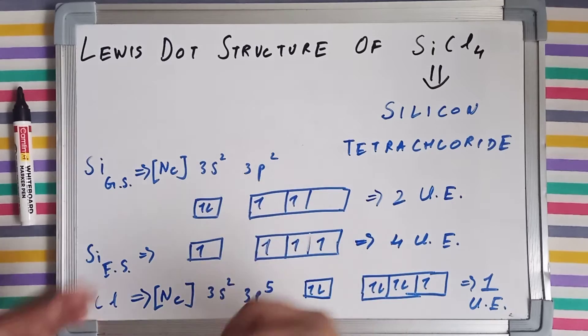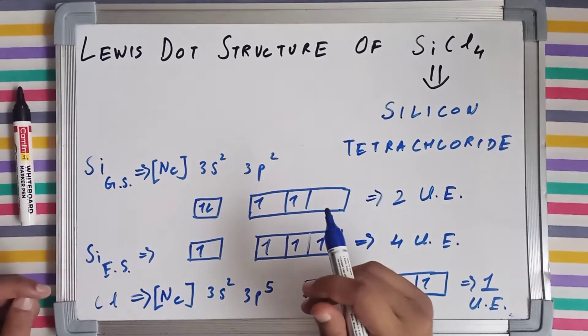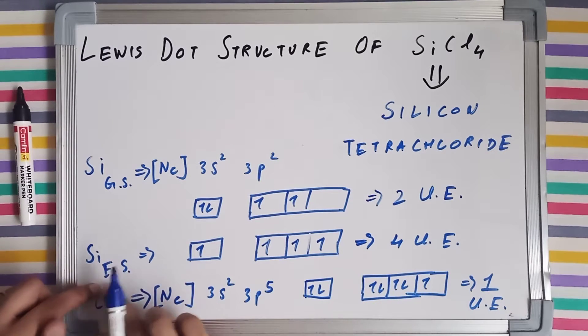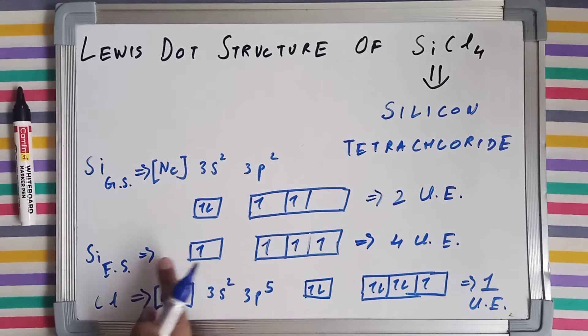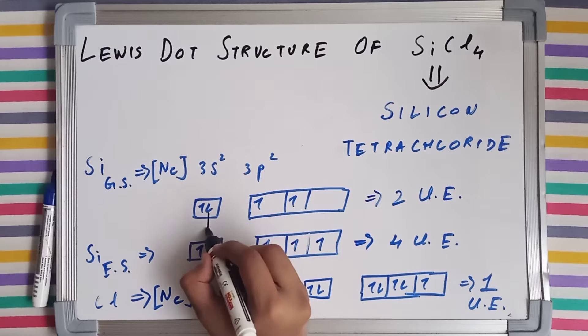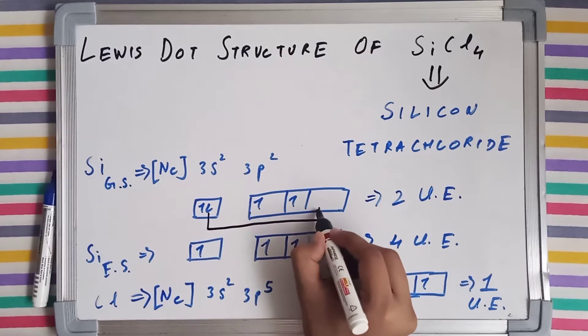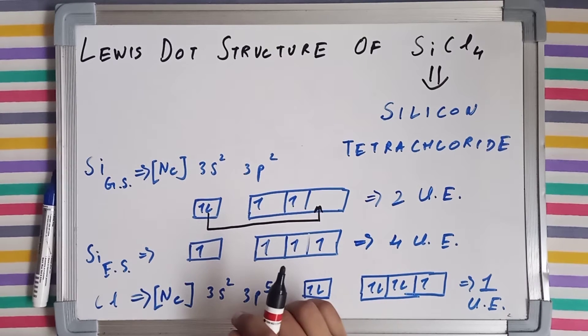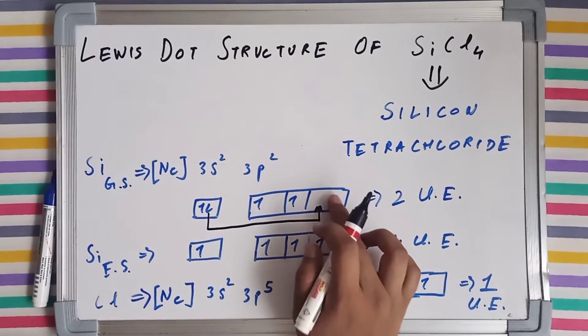So silicon will attain an excited state. What happens is that shifting or jumping of electron takes place. This electron will jump from the 3s subshell and sits on one of the orbitals of 3p subshell.